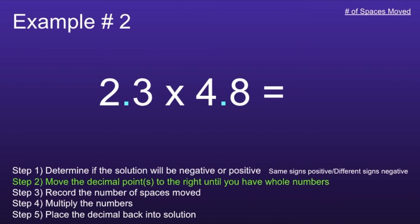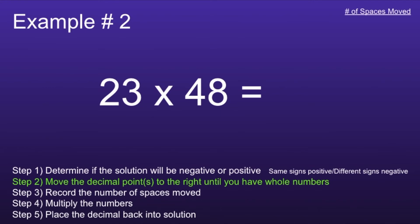Step 2: move the decimal points to the right until you have whole numbers. Notice both of these numbers have decimal points, so I want to move each of these decimal points one space to the right. When I do this, I'm left with the numbers 23 and 48, which are both whole numbers. It's also important for me to record the number of spaces moved, as I'm going to use this information later. Notice at the top right of the screen I'm going to record those two spaces that we just moved. Now we can move on to Step 4.